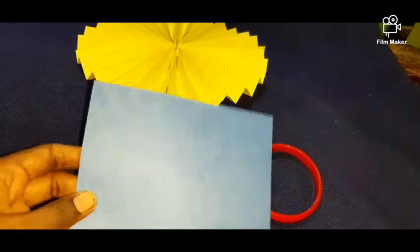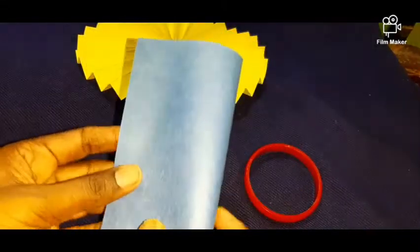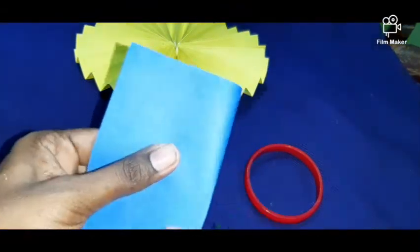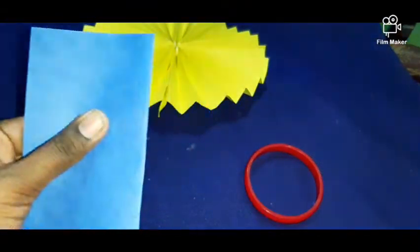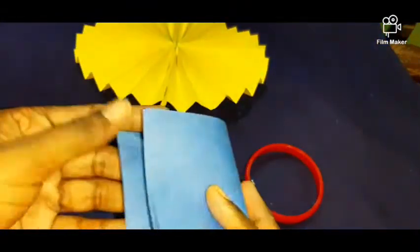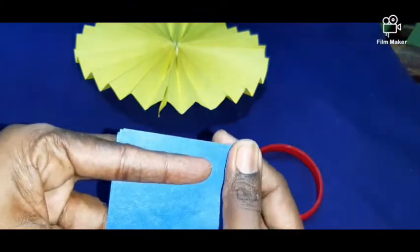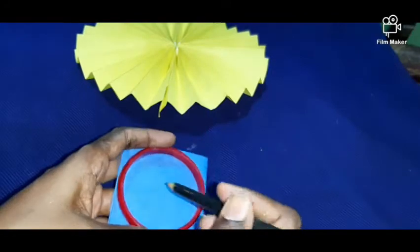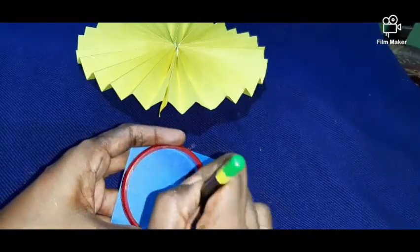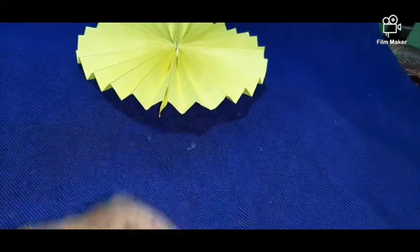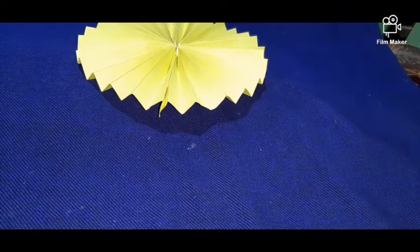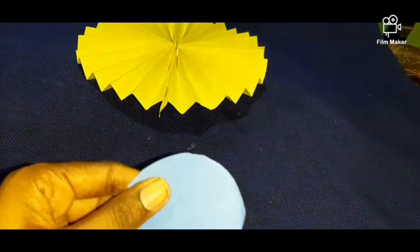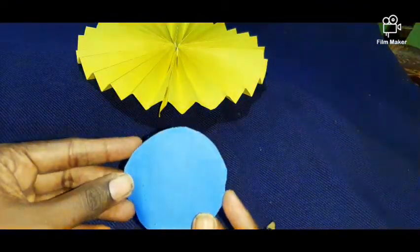You can take the square paper like this, you can fold it equally. Two times you have to fold. Take your bangle and draw the circle. You can cut the circle piece like this.